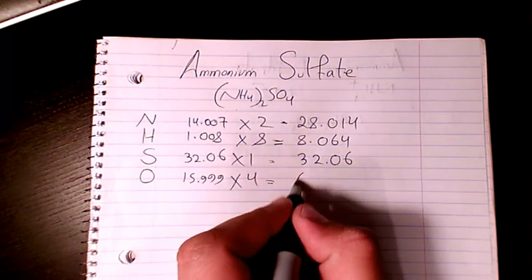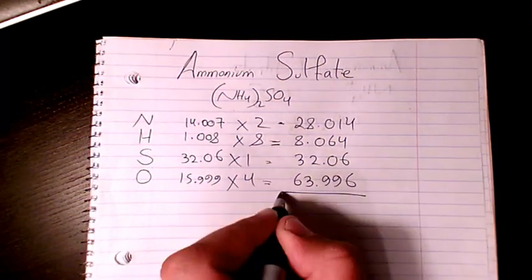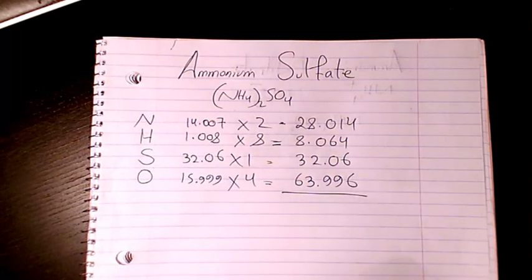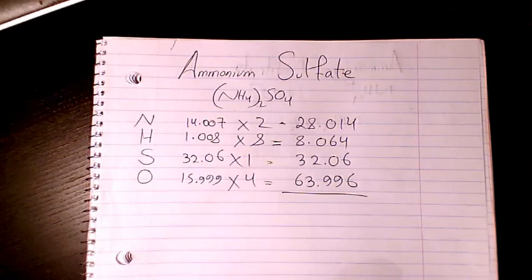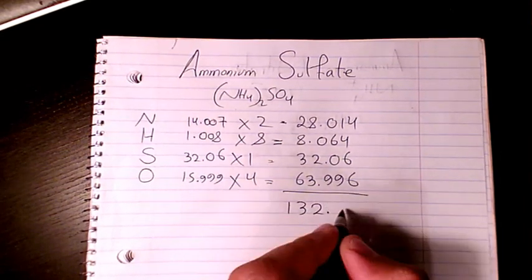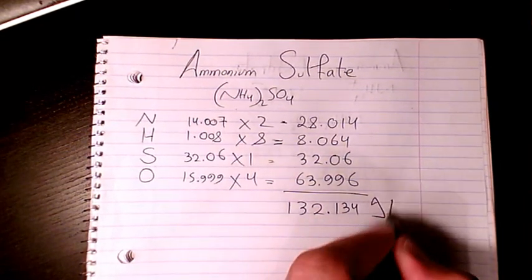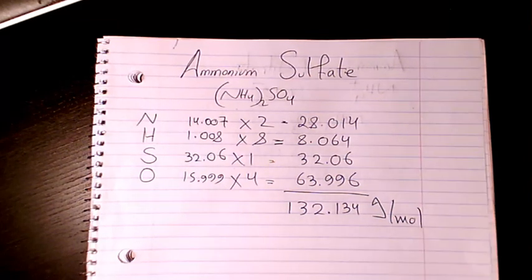Then you add them all. It will be 28.014 plus 8.064 plus 32.06 plus 63.996. That will make it 132.134 grams per mole. That's the unit for molar mass.